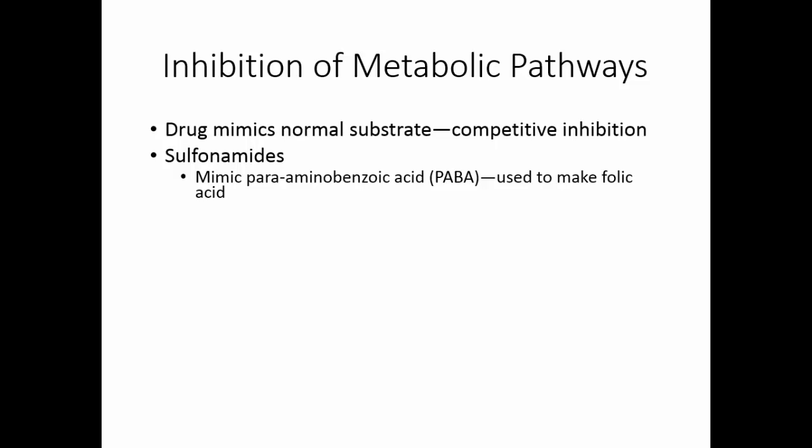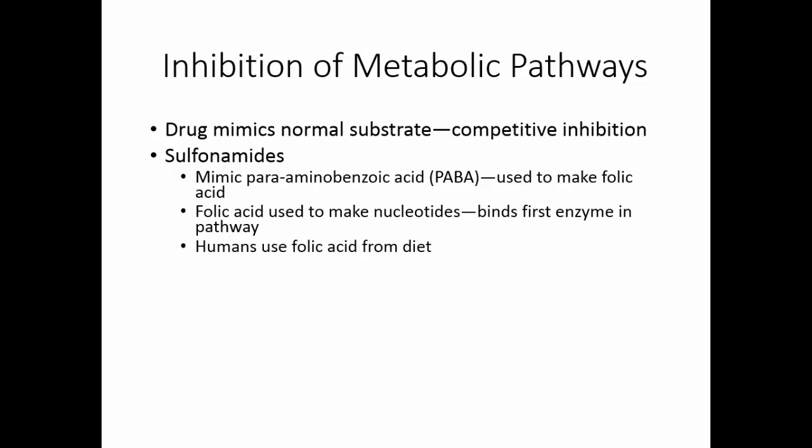Para-aminobenzoic acid is used to make folic acid by most microorganisms, and folic acid is used to make nucleotides. The sulfonamides competitively inhibit the first enzyme in this metabolic pathway. Humans use folic acid from the diet.